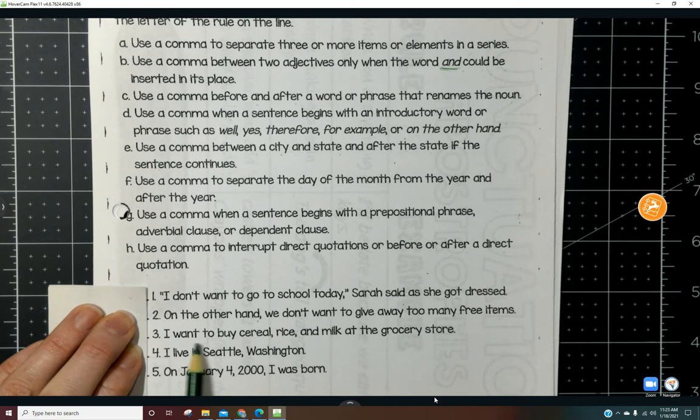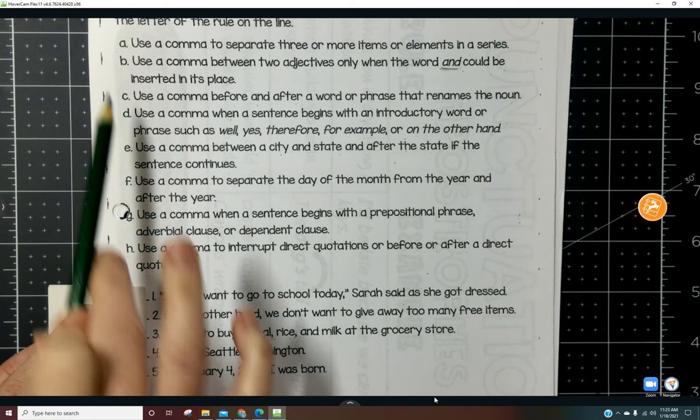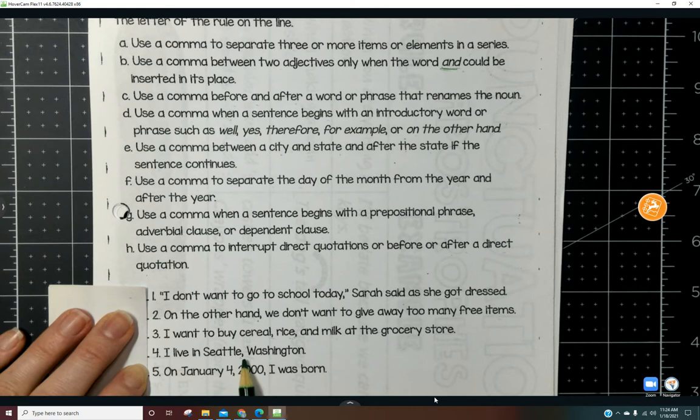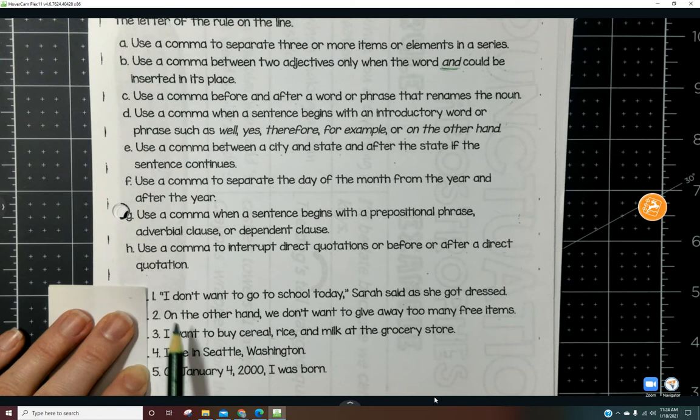Number three: 'I want to buy cereal, rice, and milk at the grocery store.' Which rule applies there? Number four: 'I live in Seattle, Washington' - city, state. Which rule does that apply to?